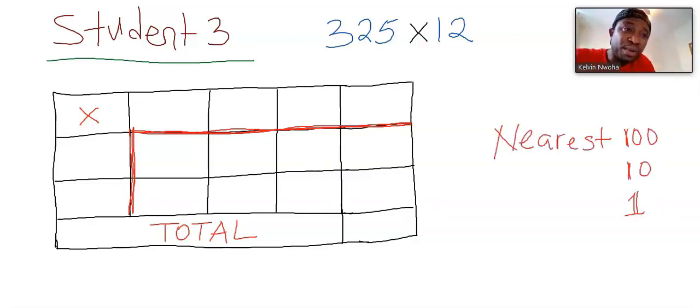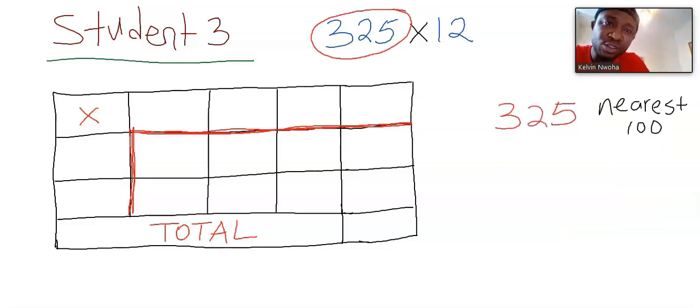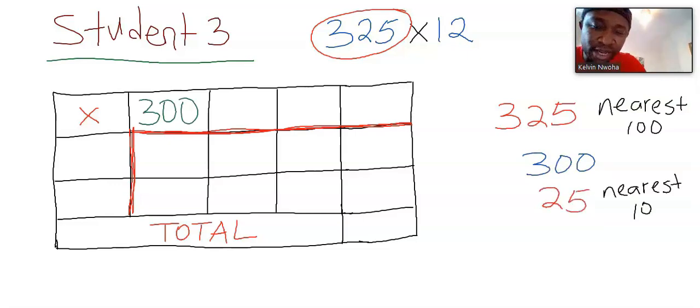To solve this problem, you must understand nearest 100, nearest 10 and nearest 1, which is nearest whole number. Next, you have to start with the first one, which is 325. 325 to the nearest 100 is 300. This 300 will move in here. Now, we are left with 25. Next, the nearest 10 of 25 is 30. However, you are not allowed to modify the question.